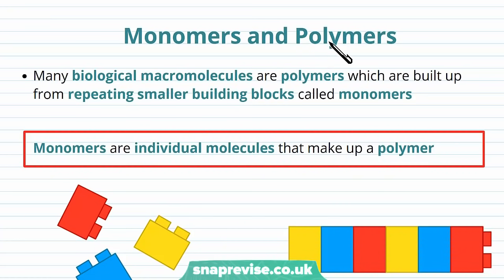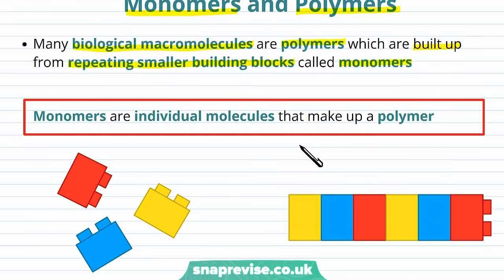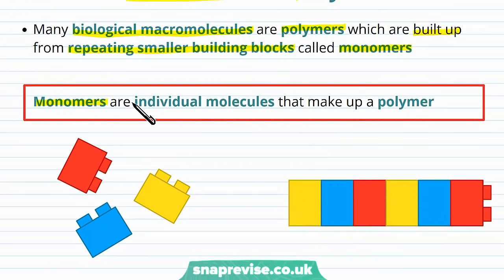So in order to understand how biological molecules assemble themselves, we have to understand the concepts and difference between monomers and polymers. So a lot of biological macromolecules don't just exist on their own. But they exist as what we call polymers. And a polymer is something which is built up from lots and lots of repeating smaller building blocks. And those building blocks individually are called monomers.